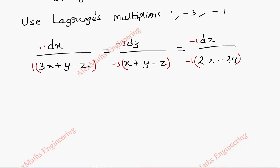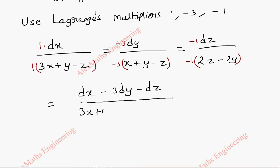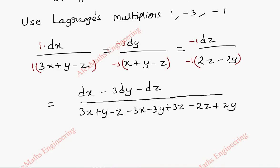Using the ratio properties, I am going to add all the numerators: dx minus 3dy minus dz, divided by 3x plus y minus z, minus 3x minus 3y plus 3z, and minus 2z plus 2y. The terms: 3x minus 3x gets cancelled, the z terms combine with minus z and cancel, and the y terms combine with plus 2y and cancel. The entire denominator becomes 0.